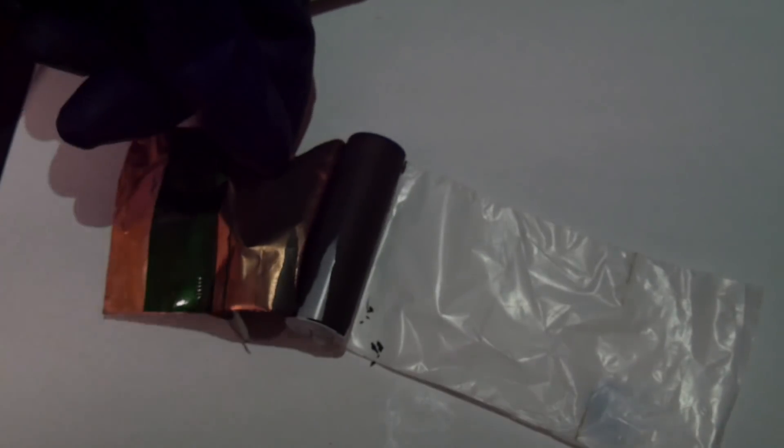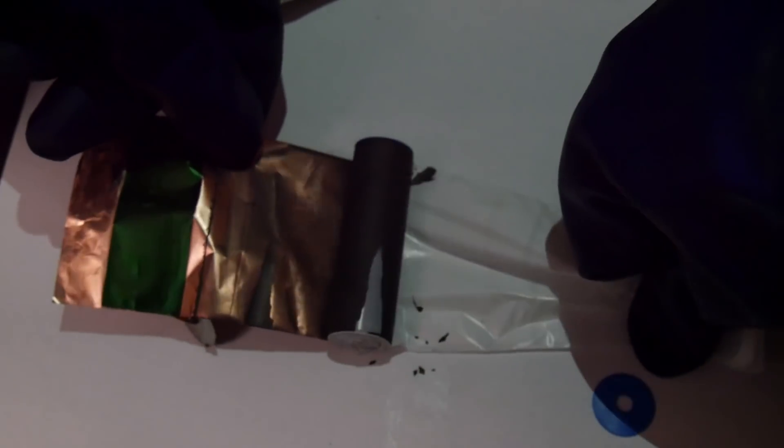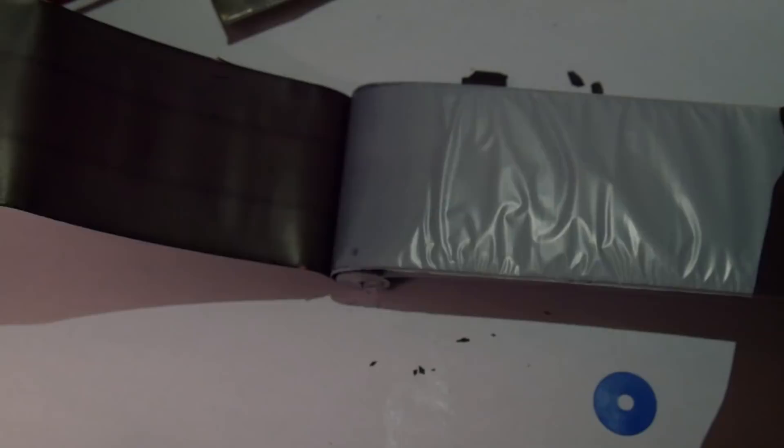This black powdery material you see here is lithium nickel cobalt aluminum oxide, which is what holds your energy. Now this lithium material is basically pasted onto another sheet of metal, which connects to the positive terminal of the battery.